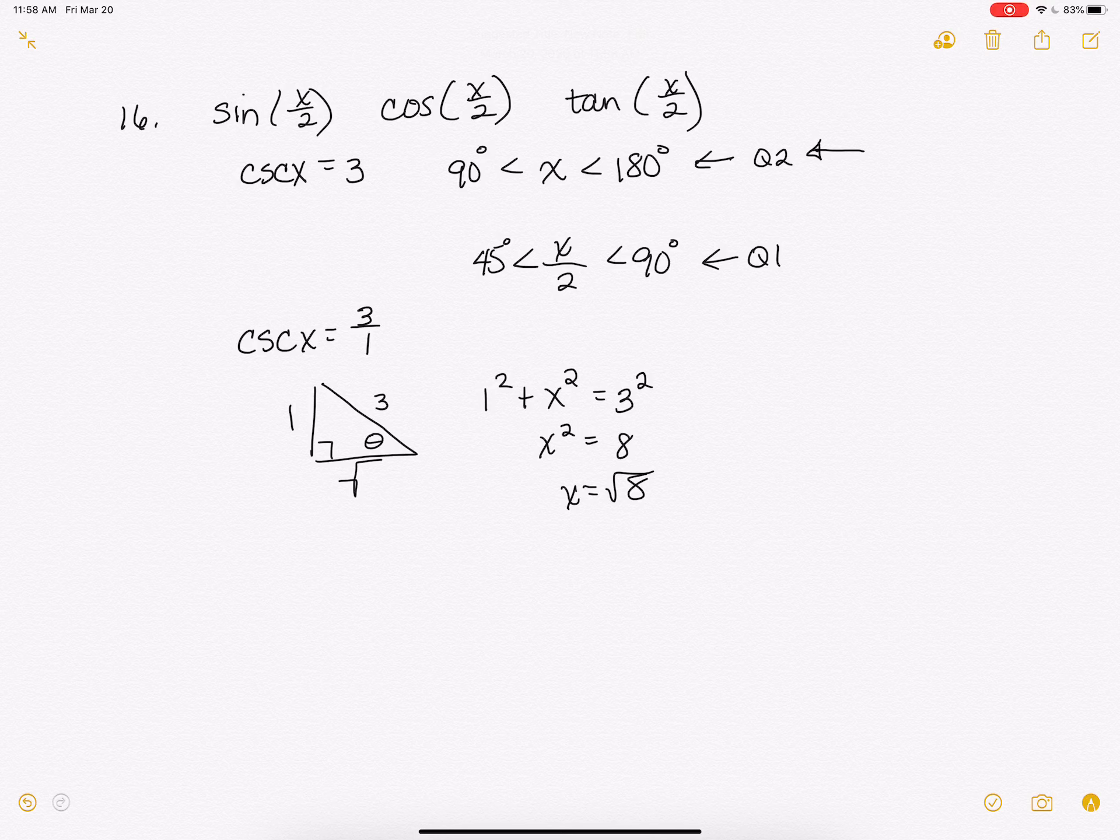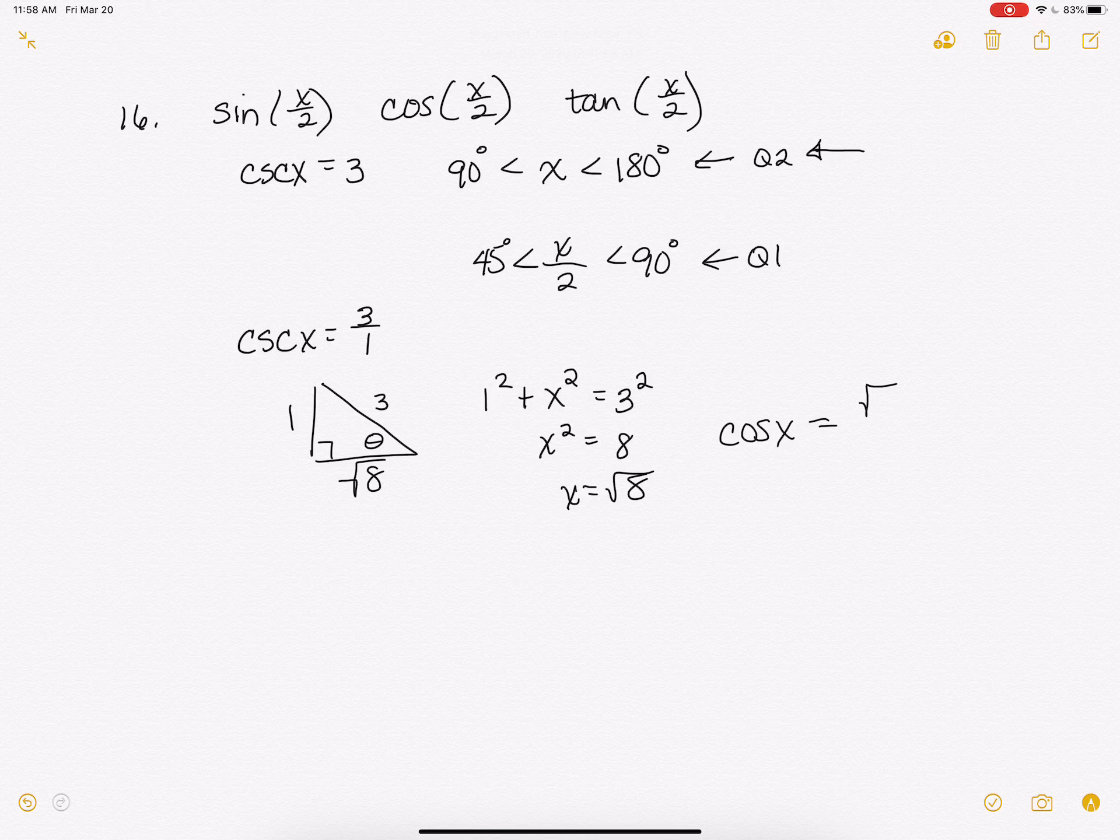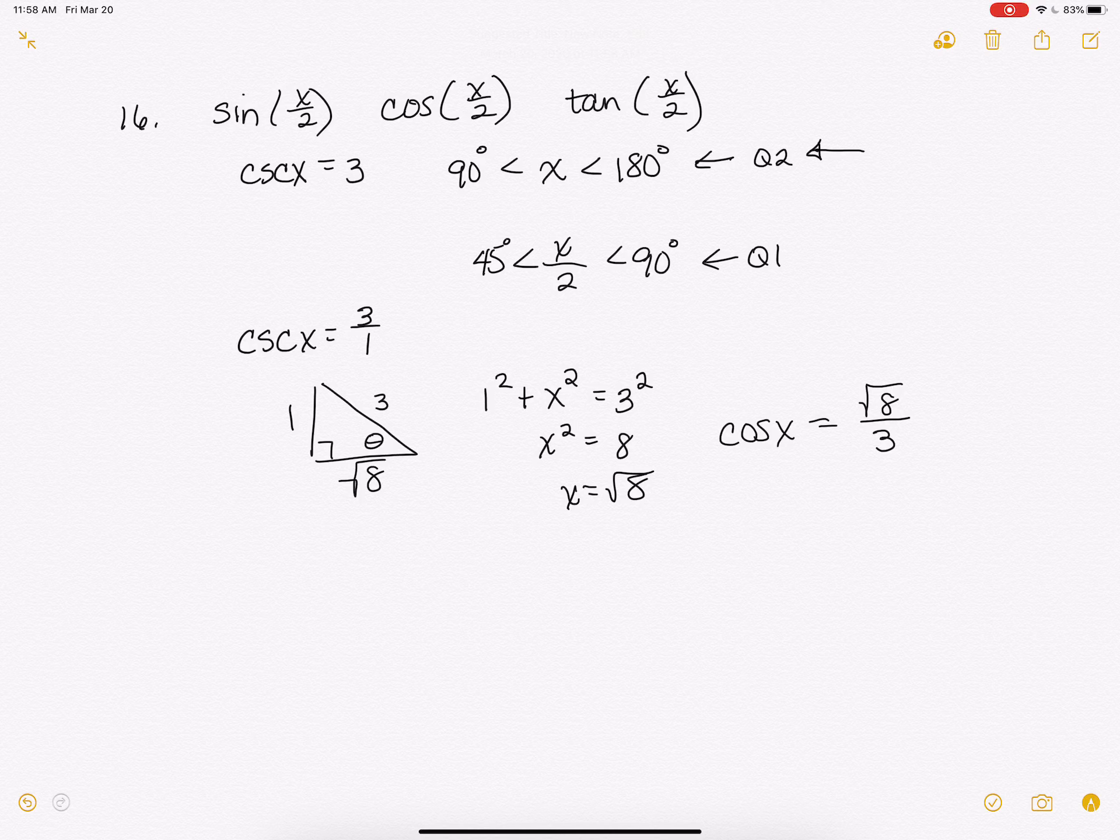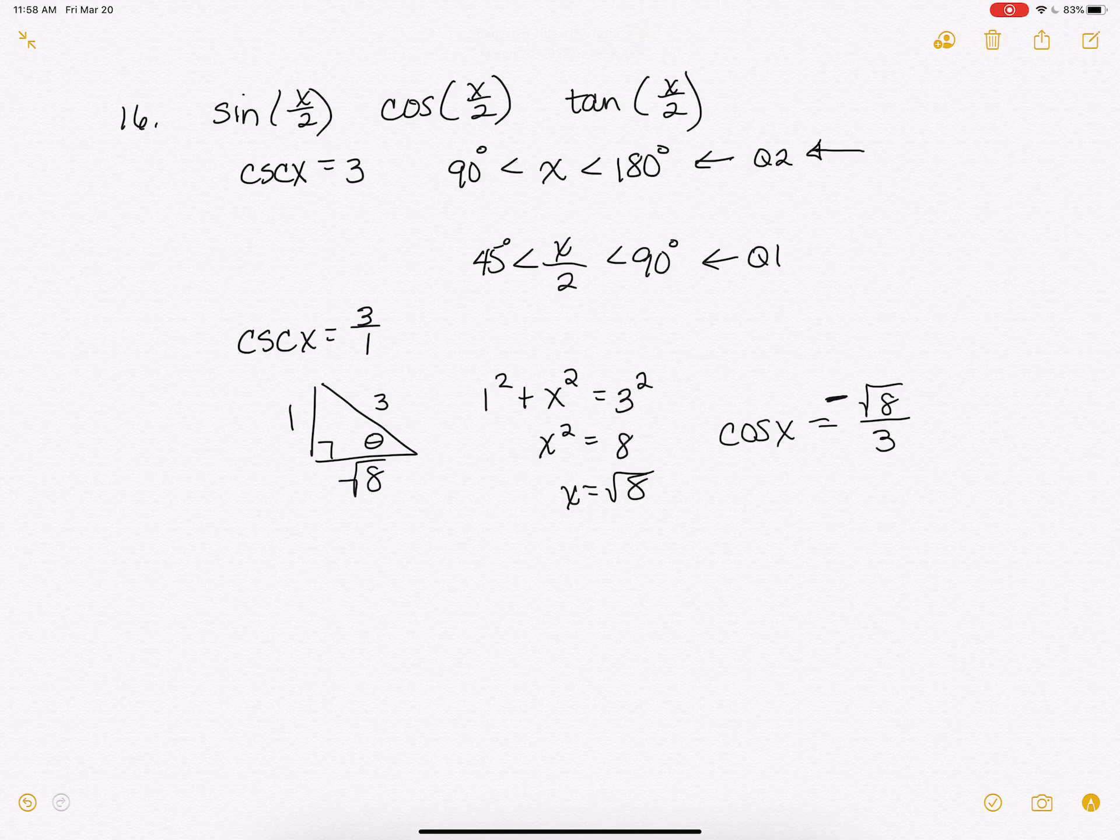Alright, so we know how to do that. But when I find the cosine of x, the cosine of x is going to be my square root of 8 over my hypotenuse. But remember that it's in quadrant 2 and that's what we need to make sure we understand. So this is going to be negative.